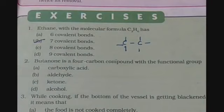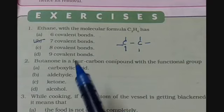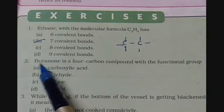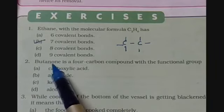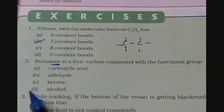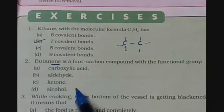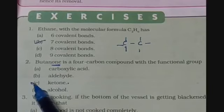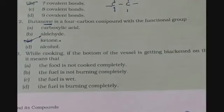Question 2: butanone is a 4-carbon compound with which functional group? As the name itself indicates — 'none' or the suffix 'one' is used for the ketone functional group. So ketone is the right answer. Question 3: while cooking, if the bottom of the vessel is getting blackened on the outside, it means the fuel is not burning completely — option B — because incomplete combustion produces a sooty flame that causes blackening of utensils.